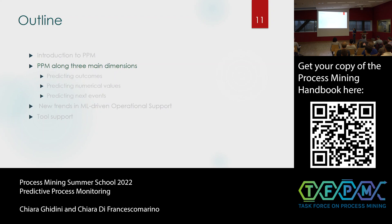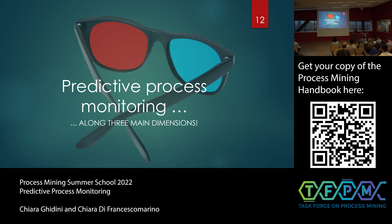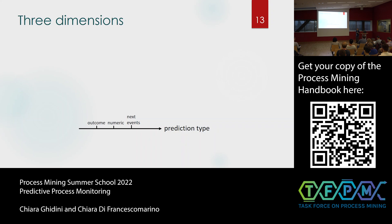Now let's focus on predictive process monitoring along three main dimensions that also help classify the state-of-the-art approaches. The first dimension is what we want to predict — the type of prediction we want to return. For instance, we can predict an outcome — whether John will recover soon — we can predict a number, like when John is going to recover, or we can predict the sequence of next activities John is going to perform.